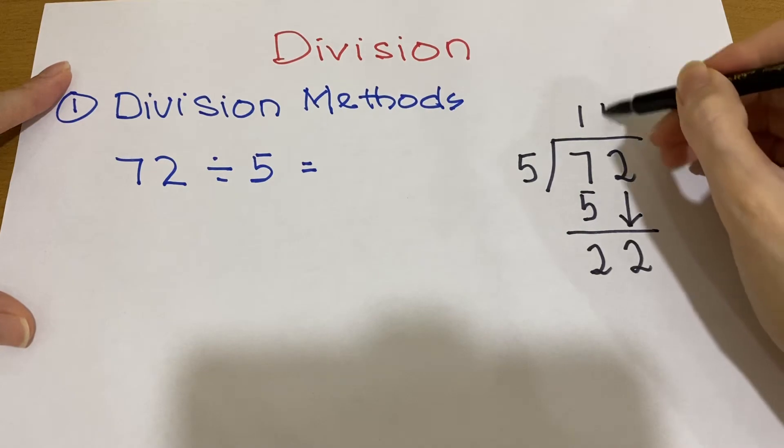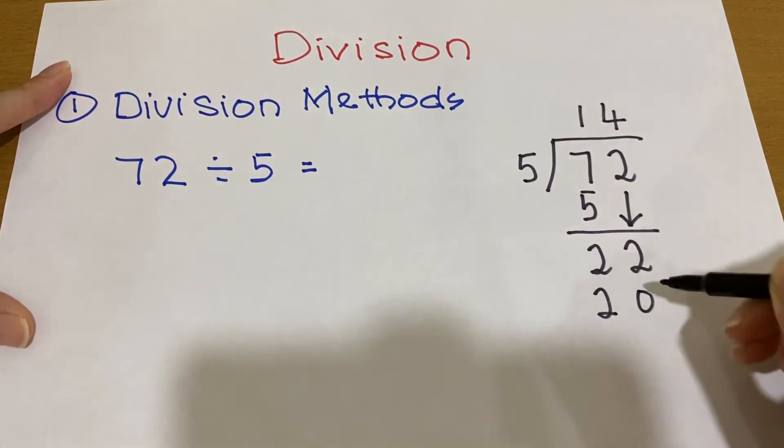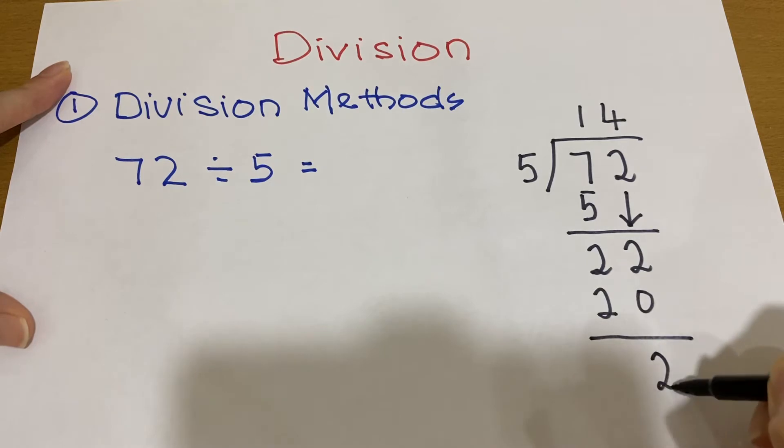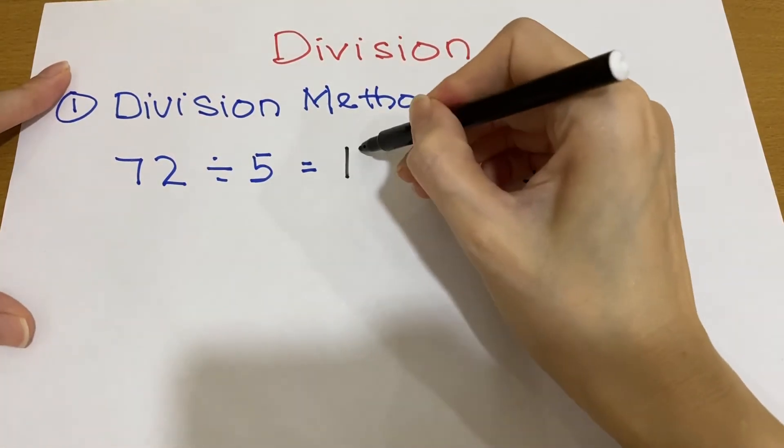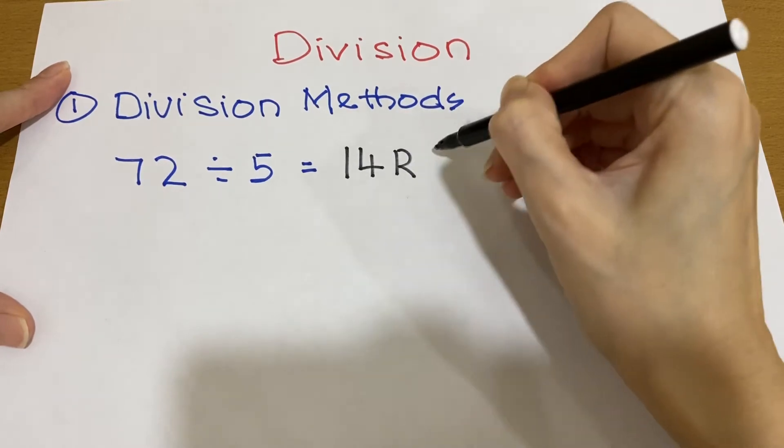We know that 4, 5 is 20. So we have remainder 2. So the answer for this question is 14 with remainder 2.